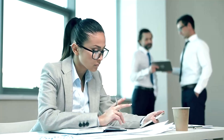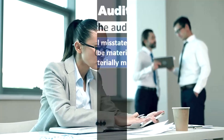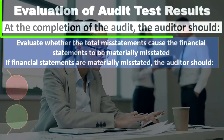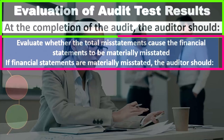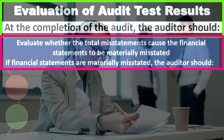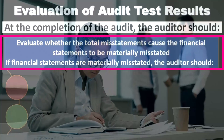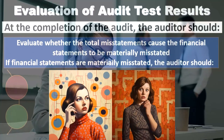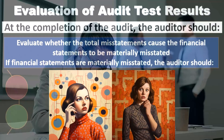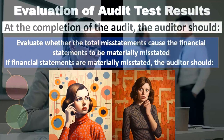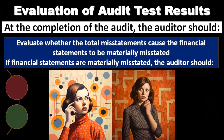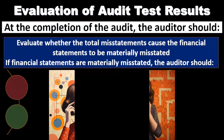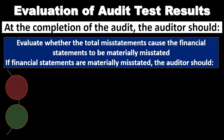At the completion of the audit, the auditor should evaluate whether total misstatements cause the financial statements to be materially misstated. As we plan the audit, we consider what would be a material misstatement. Our goal is to give an opinion — hopefully that the financial statements are free of material misstatements. Therefore, we need to know what would constitute a material misstatement.